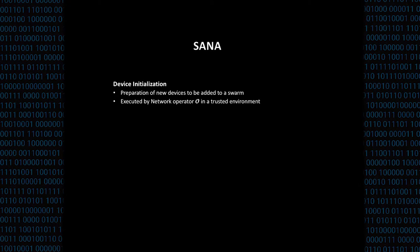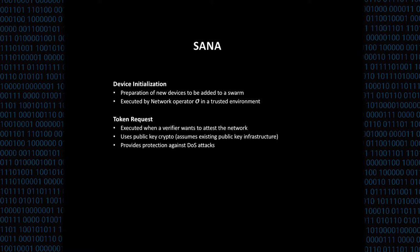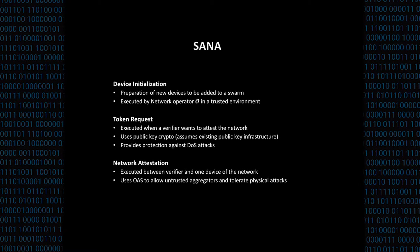Going back to our attestation protocol, the scheme consists of three protocols. First, a device initialization protocol where each device is prepared to join the network and provided with the OIS secret key needed to create an OIS signature. Second, a token request protocol executed between a verifier and the network owner, based on public key cryptography and existing key infrastructure, designed to prevent denial-of-service attacks — so any verifier must obtain a token from the network owner.